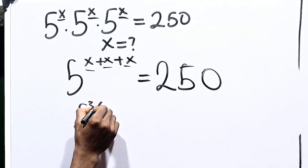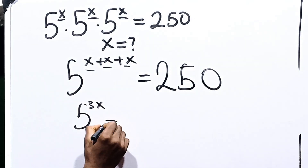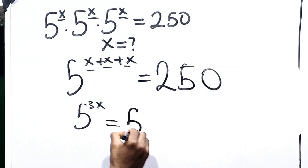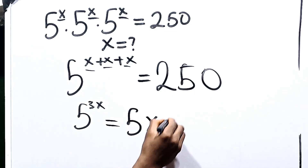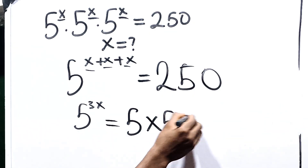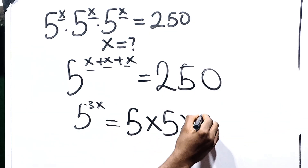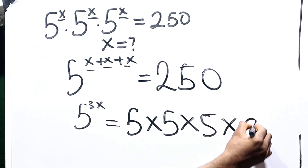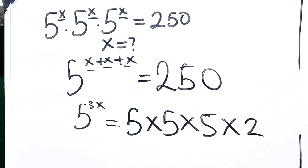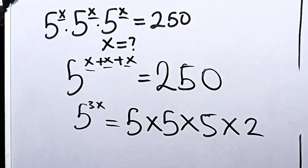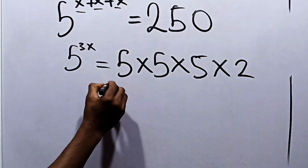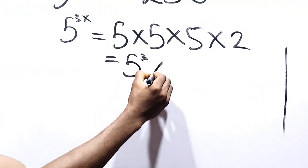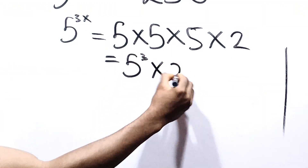5 raised to the power 3x is equal to 250. On this other hand, 250 is equal to 5 times 5 times 5 times 2, and 5 times 5 times 5 is 5 raised to the power 3, multiplied by 2.